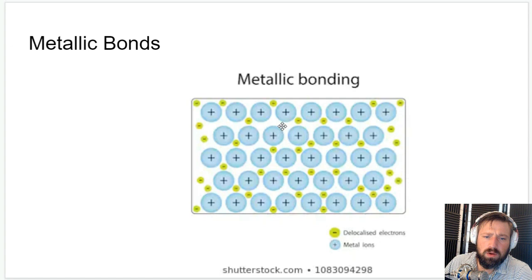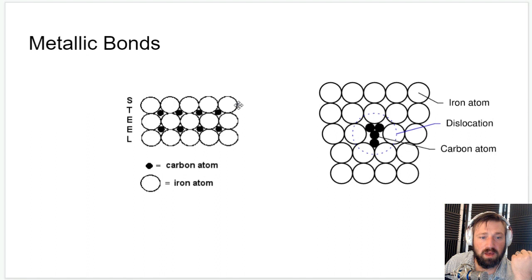So we can have a situation like this where we have steel. So this is iron atoms and then in between in the interstitial spaces we have carbon atoms stuck there. Now what would this do to the material?